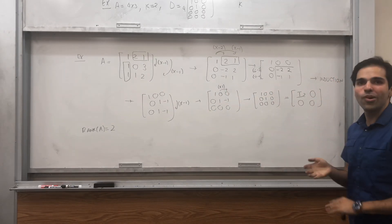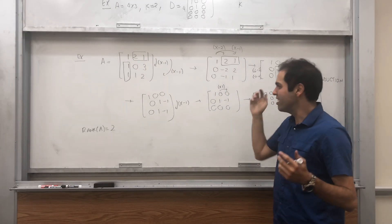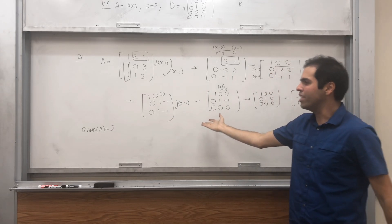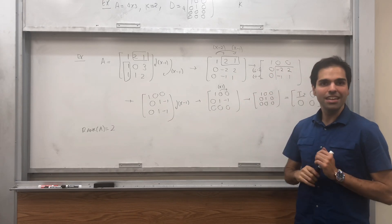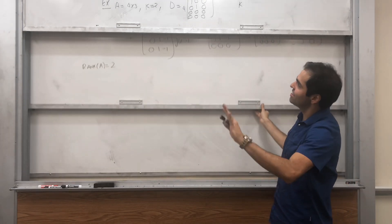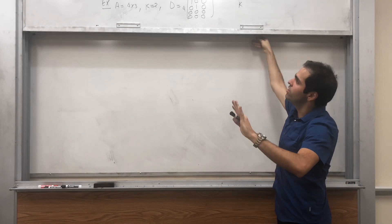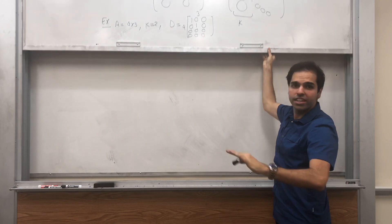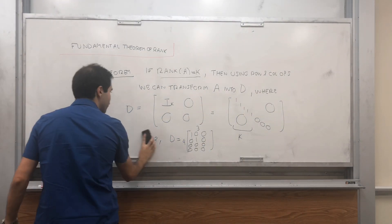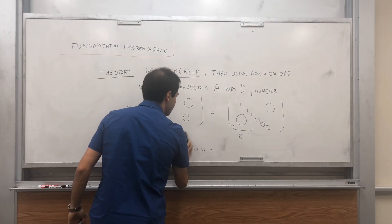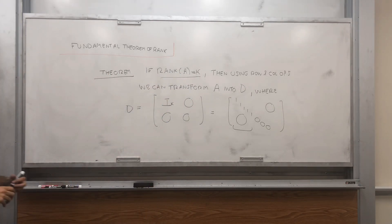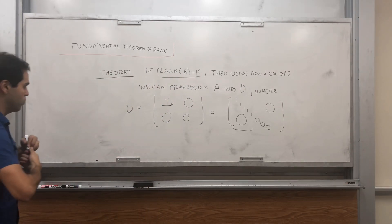There are other cool applications which I'll show in another video — for example, you can easily show that the rank of A transposed equals the rank of A. But that's not why we're here today. Today we're here for the proof, and the way the proof goes is simply induction on the number of rows.